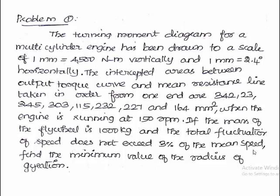Here the turning moment diagram for a multi-cylinder engine has been drawn to a scale of 1 millimeter equals 4500 Newton meter along the y-axis and 1 millimeter equals 2.4 degrees along the x-axis. The intercepted areas between output torque curve and mean resistance line taken in order from one end are 342, 23, and so forth. These are the fluctuation data above and below the mean resistance torque line.